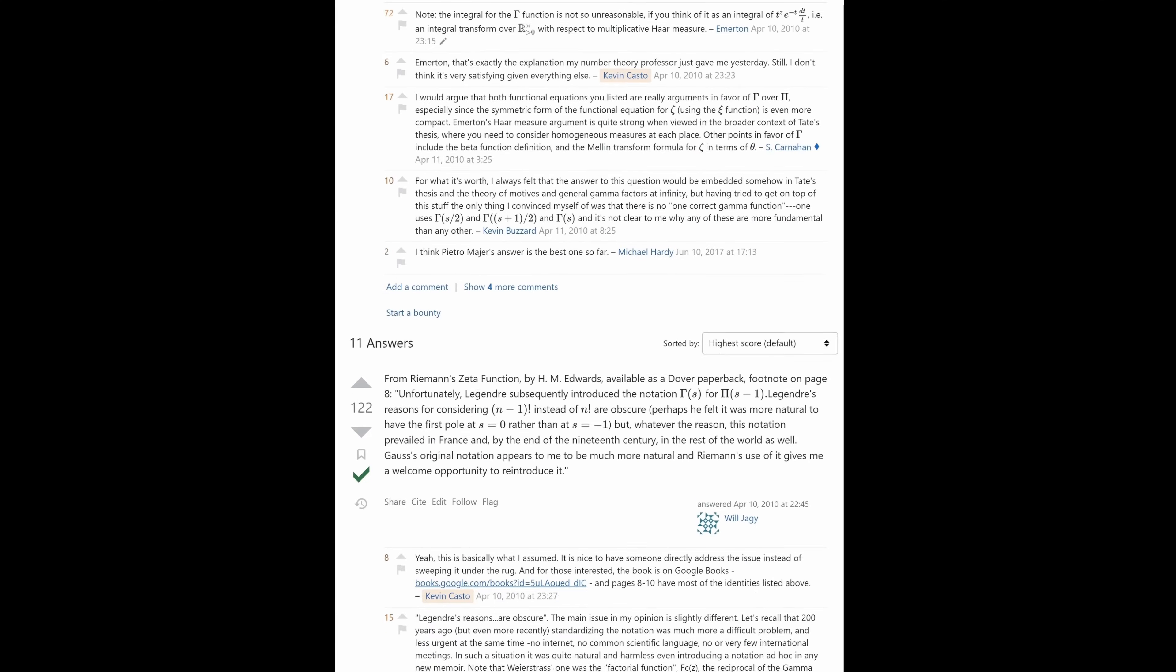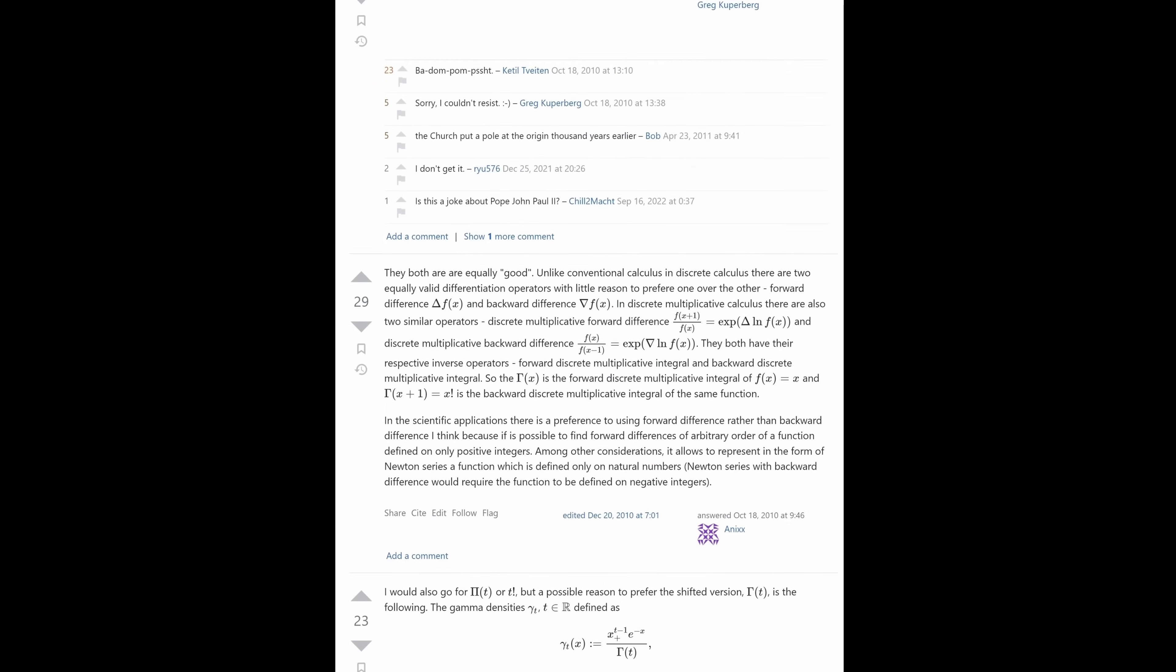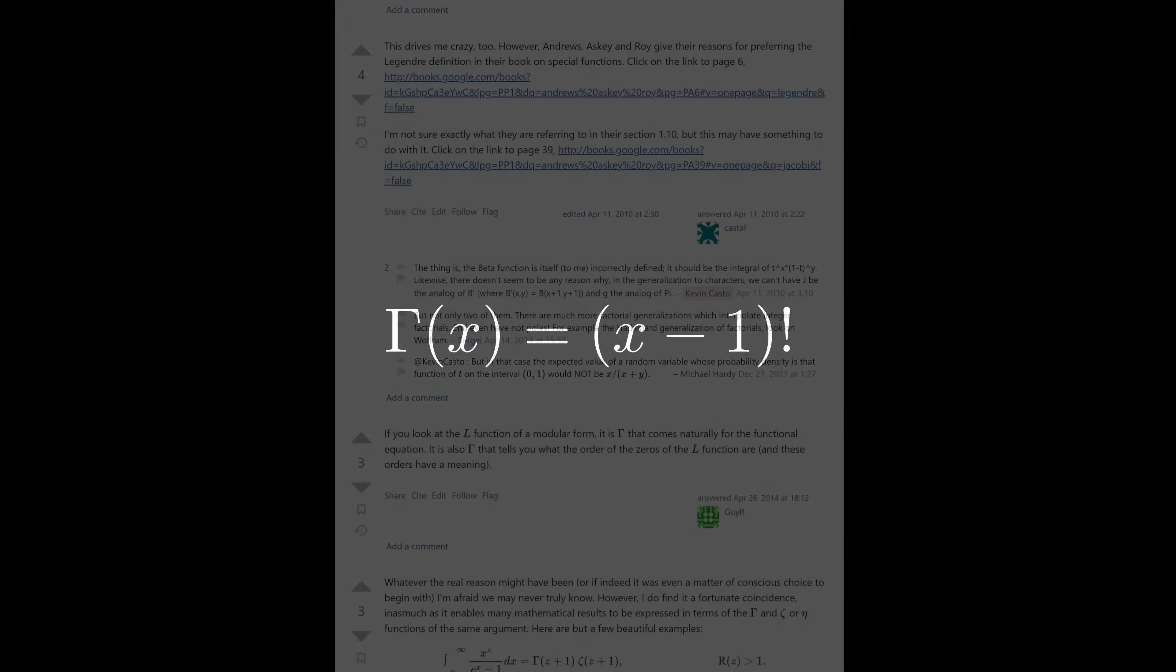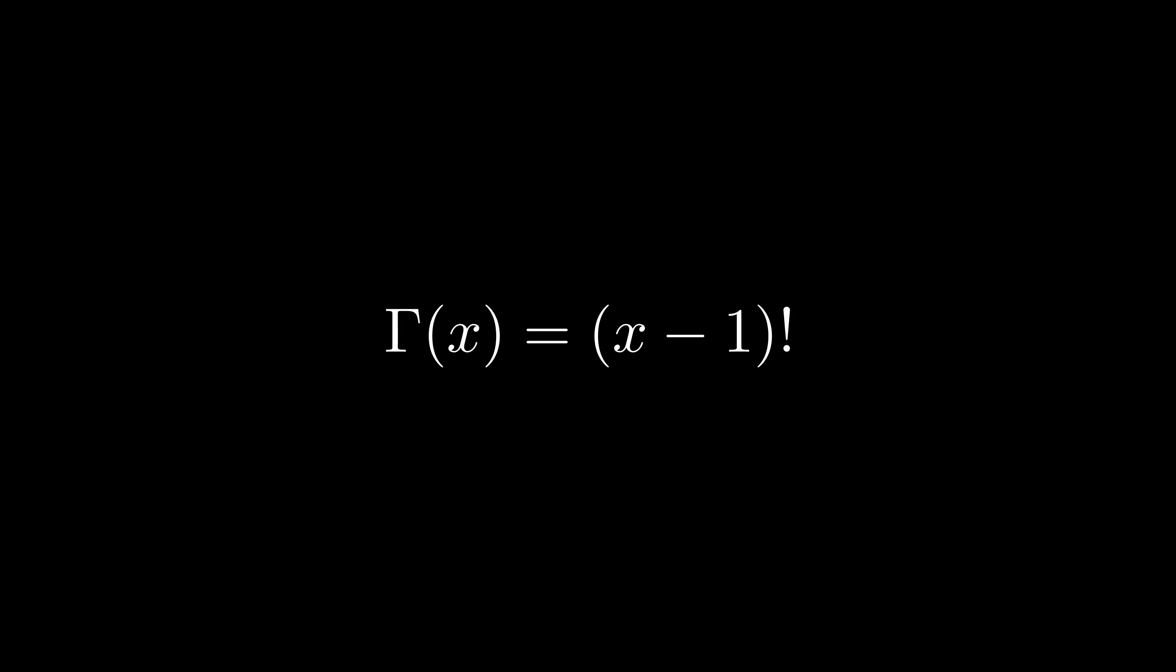But annoyingly, he didn't define it to equal x factorial. He defined it to equal x minus 1 factorial. There is a lot of discussion online about the possible reasons that he defined it this way. My personal theory is that it was a prank, because I can never keep straight whether it's a minus 1 or a plus 1, and it feels like an unnecessary complication. But whatever the reason, the overwhelming majority of literature on the topic uses the gamma function.